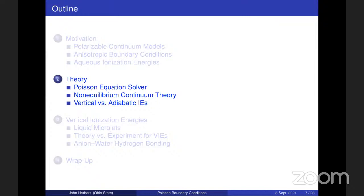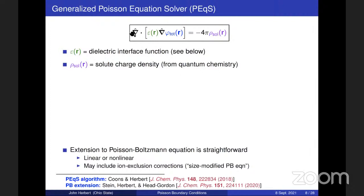Let me tell you how we actually do these calculations. The generalized Poisson equation is generalized in the sense that we allow the permittivity function epsilon to be defined point-wise on a grid. The solute charge density comes from quantum chemistry. The variable we're solving for is the electrostatic potential phi, which has a solute part from the charge density and a polarization part from polarizing the continuum. Operationally, we take the charge density from quantum chemistry and compute the corresponding electrostatic potential phi on a three-dimensional real-space Cartesian grid, typically with a grid spacing of about a quarter of an angstrom.